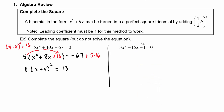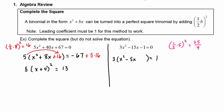The first order of business is to take the minus one and move it to the right-hand side as a positive one. Then factor out the three so we have three times x squared minus 5x, leaving some space. We know we need to take one half of 5 and square that number, which gives us 25 fourths. So inside the parentheses we put plus 25 over 4. We have to counteract that on the right-hand side — it's 3 times 25 fourths that we added.